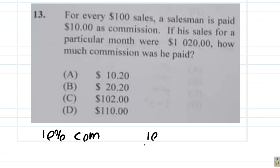So he's supposed to get 10%, 10 out of every hundred, of $1,020. So 10 out of every hundred is one tenth. So one tenth of this is $102. So the answer is C.